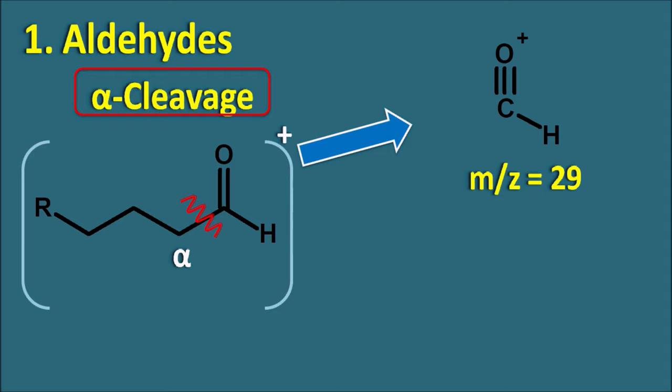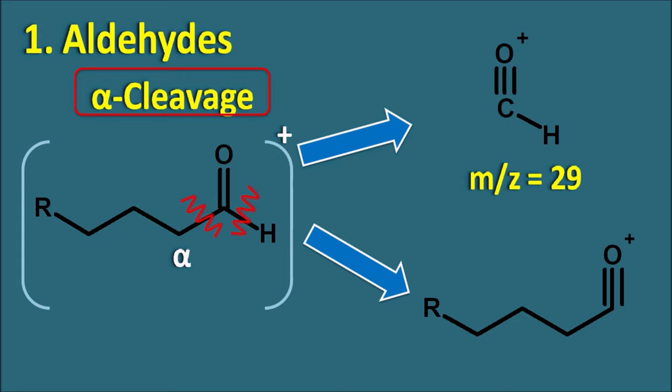Aldehydes can also undergo fragmentation between the carbonyl carbon and the hydrogen. When this fragmentation occurs, a neutral hydrogen is removed along with the other fragment ion. This is a large fragment ion, and if the molecular ion has molecular weight M, then this fragment ion will have M minus 1, since only one proton is removed. So loss of proton results in the M-1 peak.